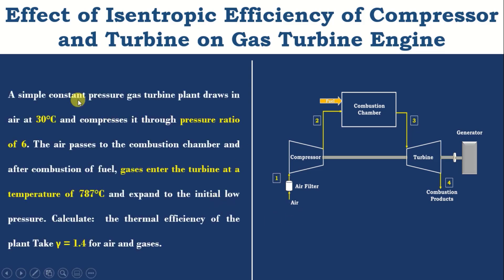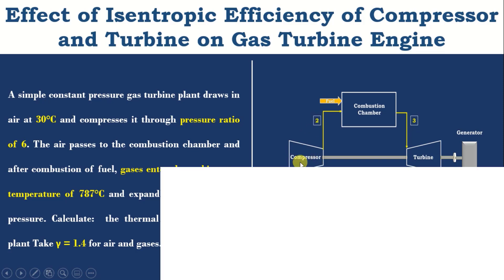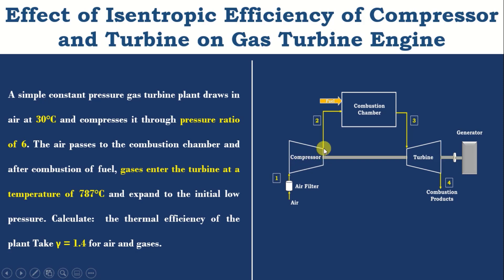In Problem 1, a simple constant pressure gas turbine plant draws air at 30°C and compresses it through a pressure ratio of 6, that is P2 divided by P1 is equal to 6. The air passes through the combustion chamber and after combustion of fuel, gases enter the turbine at 787°C and expand to the initial low pressure. Calculate the thermal efficiency of the plant. Take gamma equal to 1.4 for gases and air. This problem has already been solved in the last lecture of this playlist.